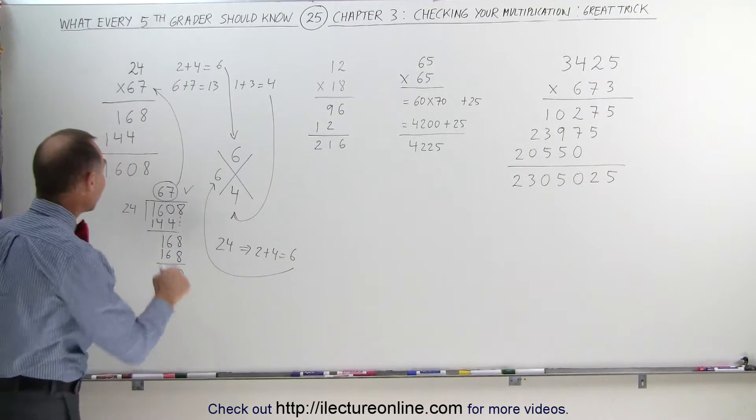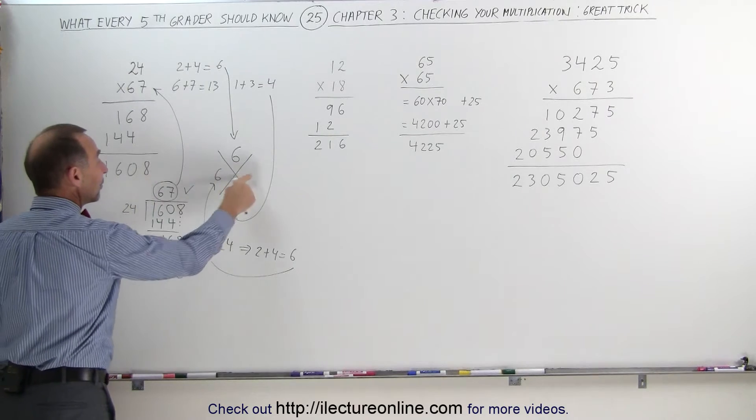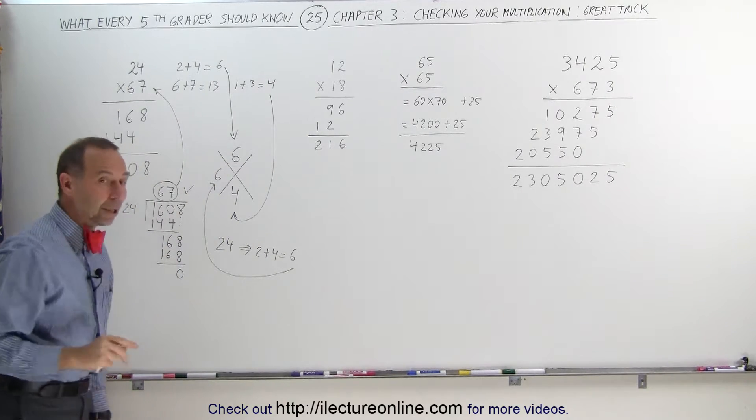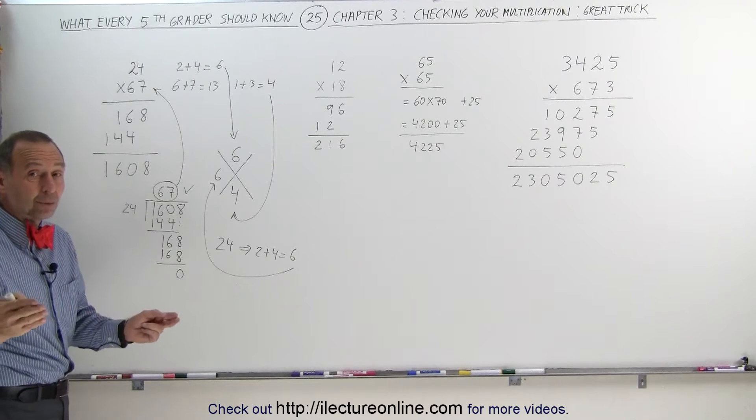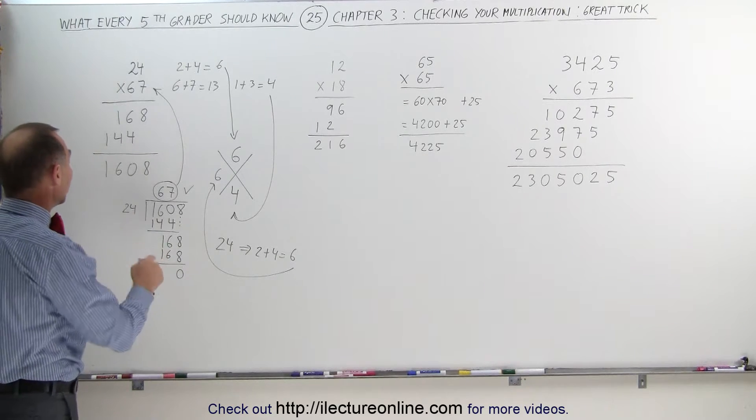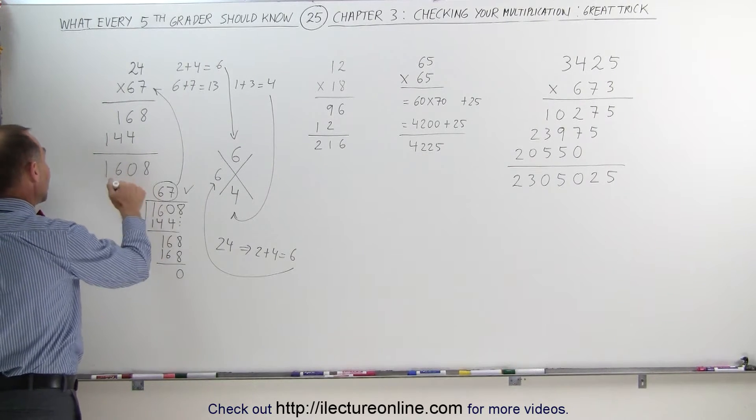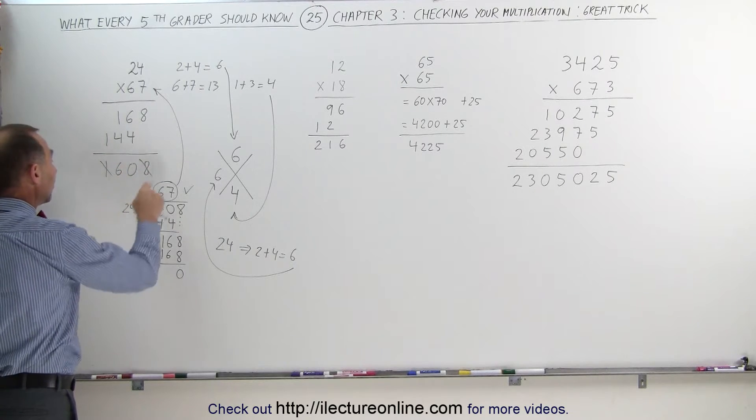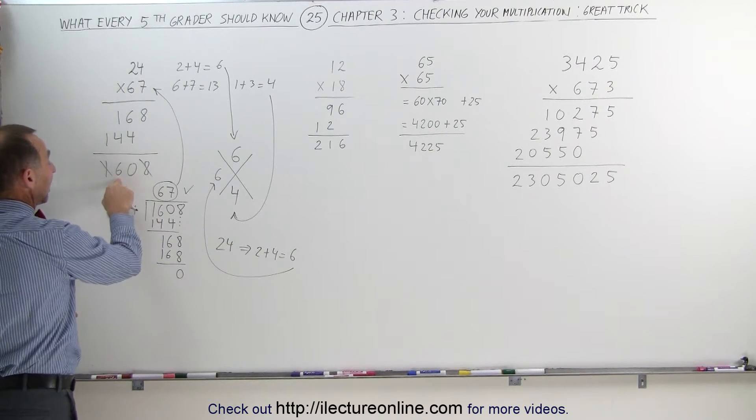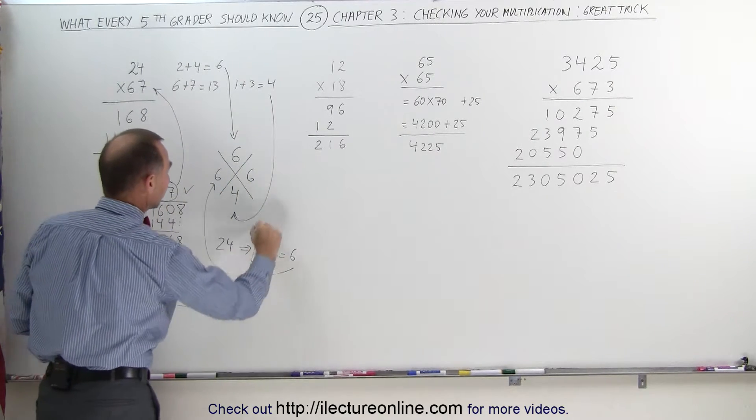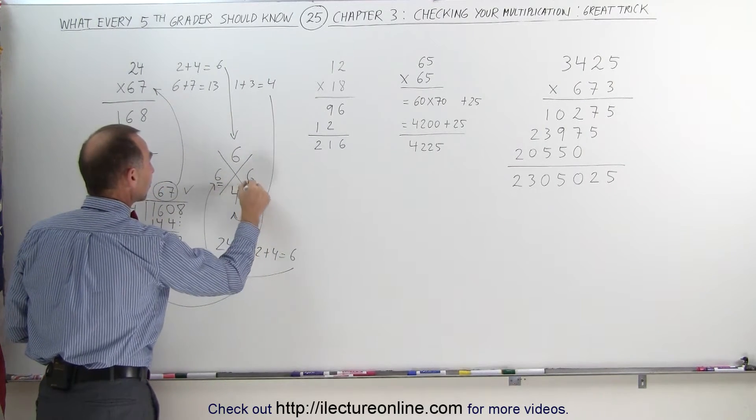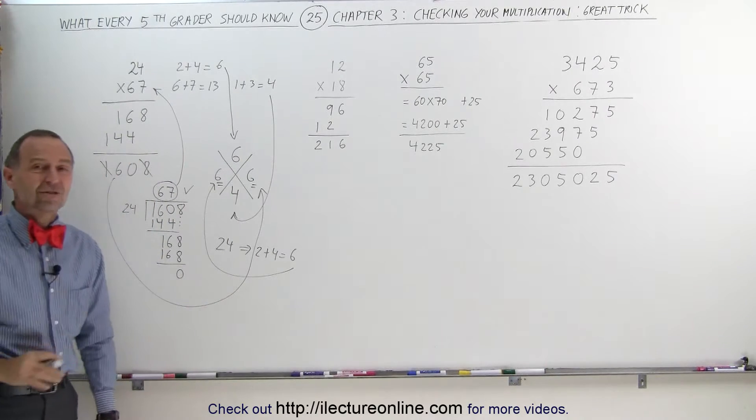Now all we have left to do is add up these numbers right here to see if we get a six over here. Now one more trick, if any two numbers or any three numbers add up to nine, you can simply ignore them. For example, one plus eight adds up to nine, so we ignore those two numbers. All that's remaining is six, and that number goes in here, so this six comes over here, and if these two numbers are the same, your multiplication is correct.